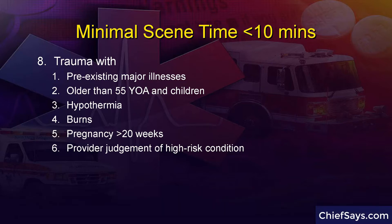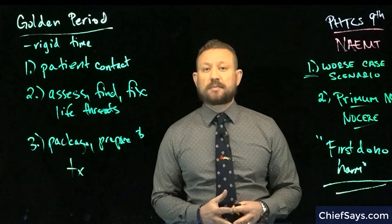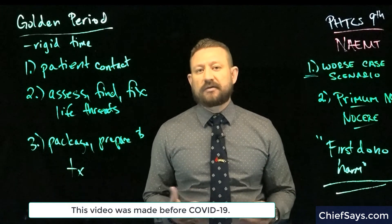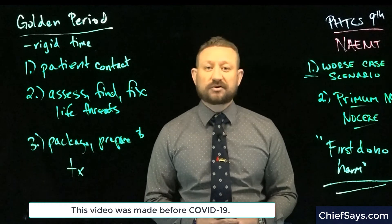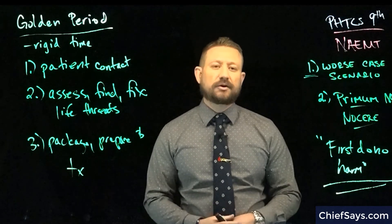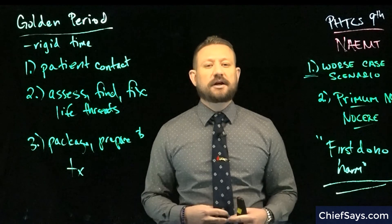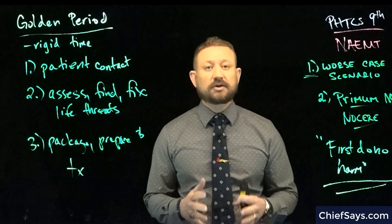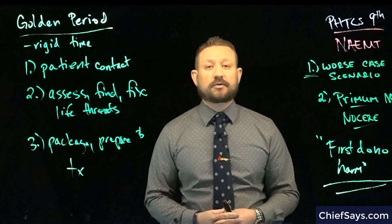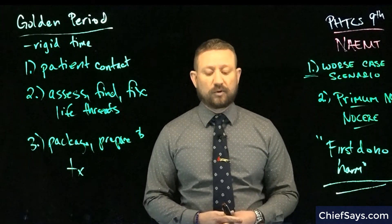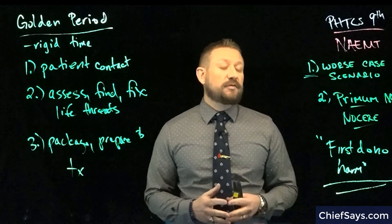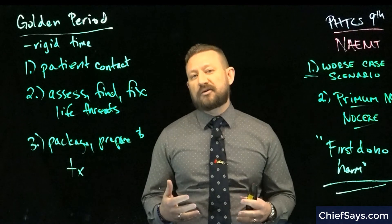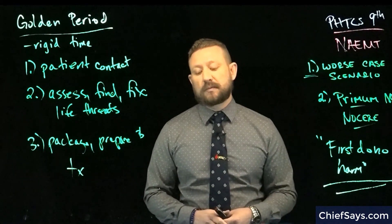When determining where to take patients, further principles can help. In this day and age, ERs commonly have 80 people in the waiting room, and trauma centers are being overwhelmed. We don't want to take all trauma patients to a trauma center — some patients are appropriately taken to lower-level or non-trauma facilities. PHTLS ninth edition, page 35, box 2-6, outlines the mechanisms requiring transport to a trauma center.